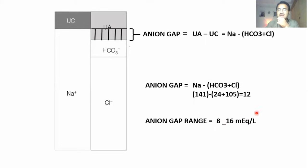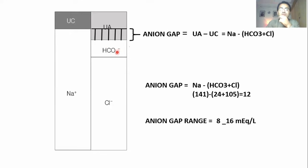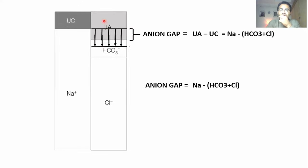Now, if there is any acid in the body, which of these three ions will neutralize that acid? Obviously it's bicarbonate, because bicarbonate is a weak base that reacts with acid. Whenever there is an acid, bicarbonate is consumed. If bicarbonate is consumed, there will be a reduction in that part — this part of the diagram will shrink. When it shrinks, the body increases unmeasured anions to counter the reduction of bicarbonate.